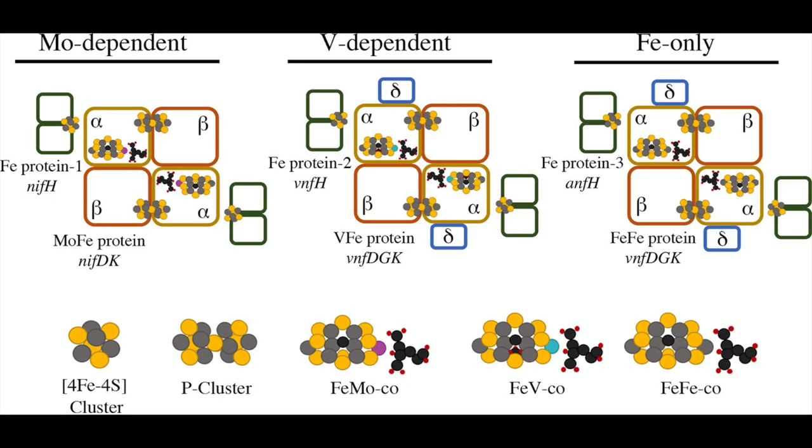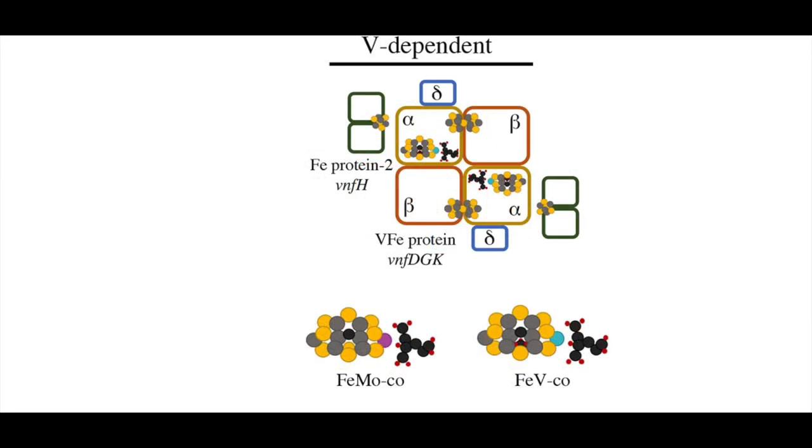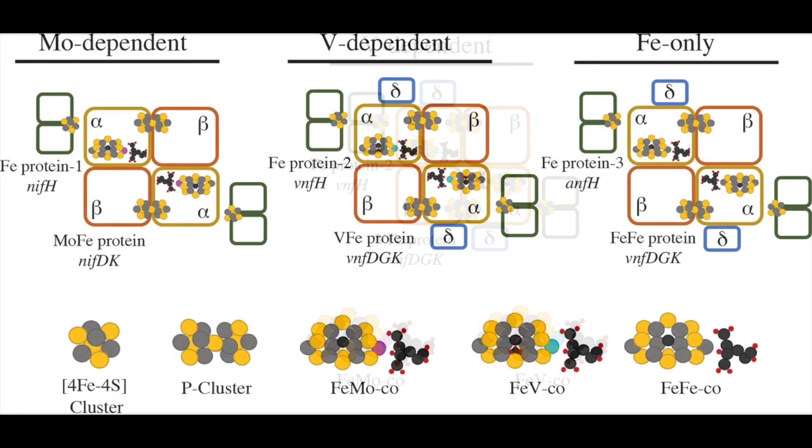Research into increasing the efficiency of this process is currently ongoing, such as the use of vanadium iron nitrogenases as opposed to molybdenum iron nitrogenases. While its mechanism is still unknown, it's shown to be three times as effective.